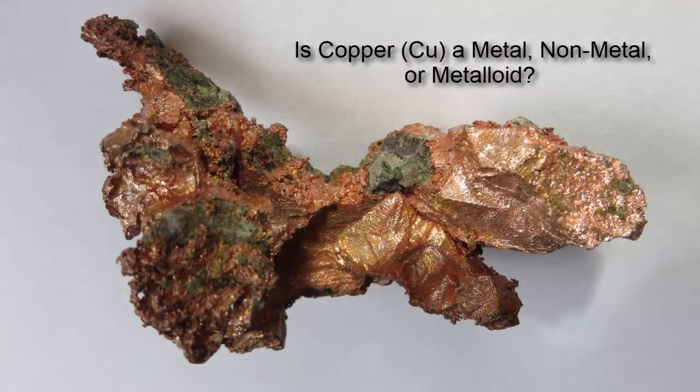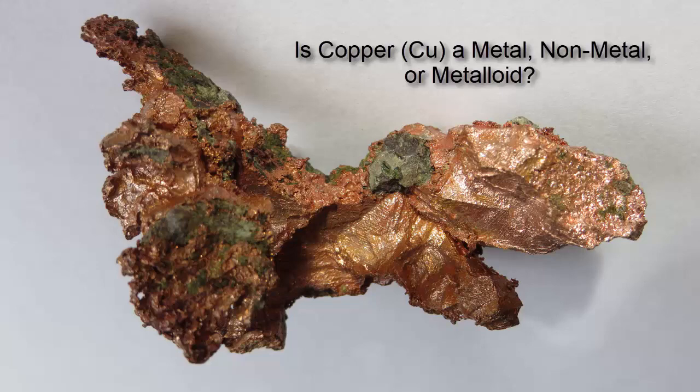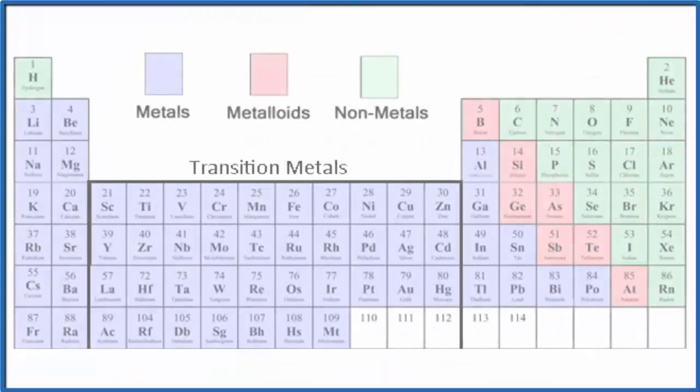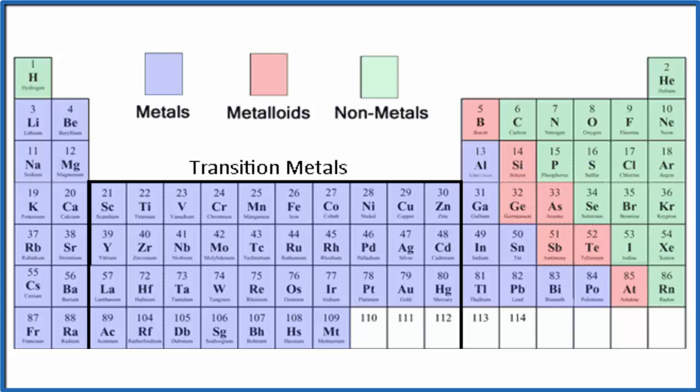A simple way to determine if copper is a metal, non-metal, or metalloid is to look at the periodic table. Elements on the periodic table are grouped by similar physical and chemical properties. Metals tend to be on the left and center of the periodic table.